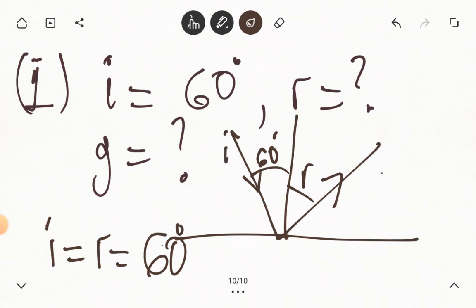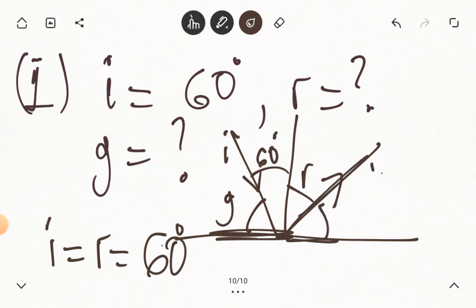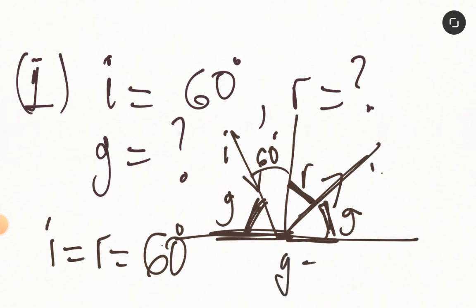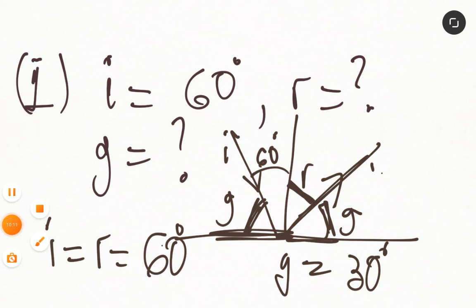There is a third angle — between either the incident ray and the reflecting surface, or between the reflected ray and the reflecting surface. This is called the glancing angle, G. You realize that when you add the angle of incidence to the glancing angle, you always get 90 degrees. So if the angle of incidence and angle of reflection are both 60 degrees, automatically the glancing angle equals 30 degrees, because the angle of reflection and the glancing angle must sum to 90 degrees.